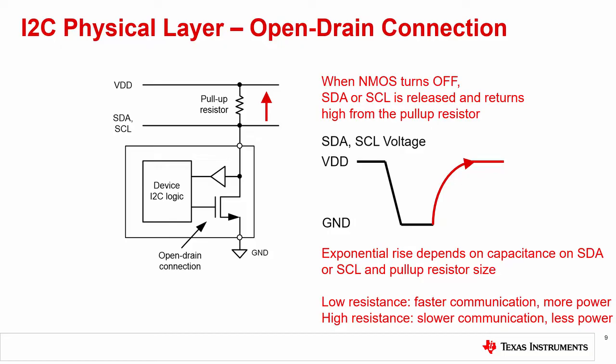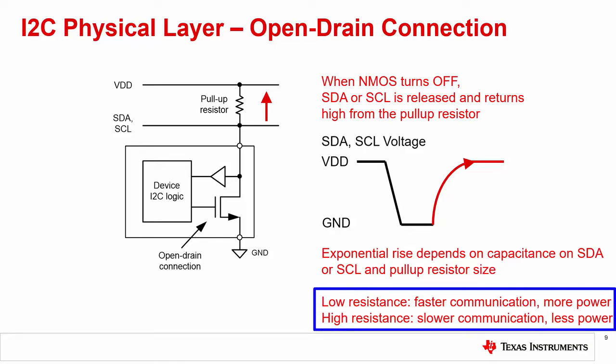With higher resistive values, the I2C bus may pull up the line slower and limit the bus speed. Capacitance on the bus lines also has an impact on communication. Higher capacitance limits the speed of I2C communication, the number of devices, and the physical distance between devices on the bus. A smaller pull-up resistor has a faster rise time, but requires more power for communication. A larger pull-up resistor has a slower rise time, leading to slower communication, but requires less power.